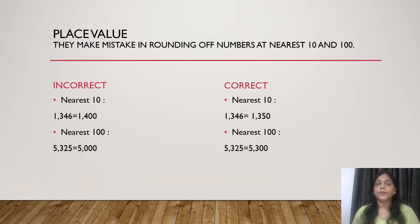Another topic of place value is rounding. Children make mistake in rounding of the numbers to nearest ten and hundred. Let us take one example 1346, we have to find its nearest ten. In place of writing 1350 they write 1400. Let us take another example 5325, we have to find its nearest hundred. In place of writing 5300 they write 5000. This mistake is done by most of the students because they do not follow the general rule of rounding.